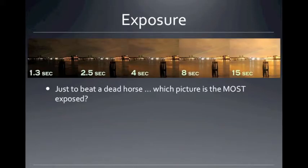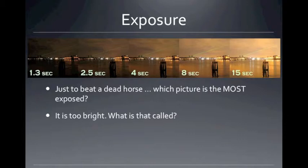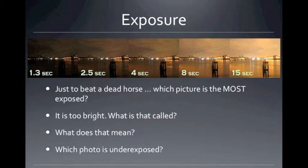Which is the most exposed picture? It's the one on the far right. It was most exposed because it had a shutter that was left open 15 seconds as opposed to 1.3 seconds on the left. The most exposed picture on the right had more time, and that one I would consider overexposed, which means it got too much light. The underexposed picture — the one that got too little light — is on the far left, because it had the least amount of time for the shutter being open.